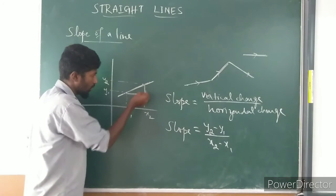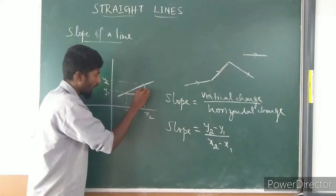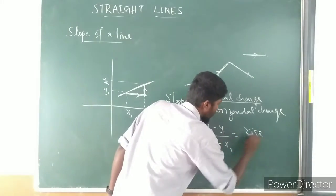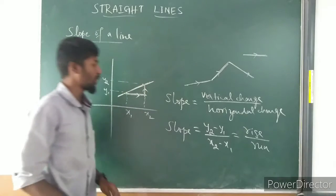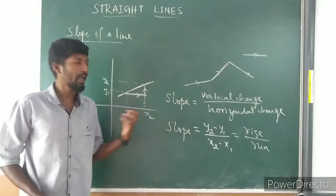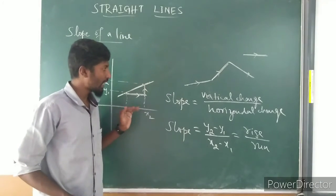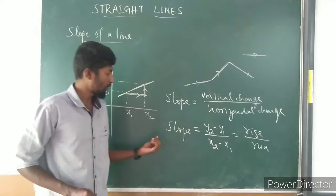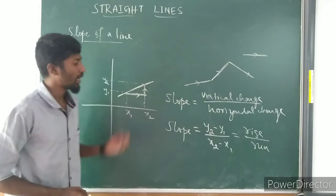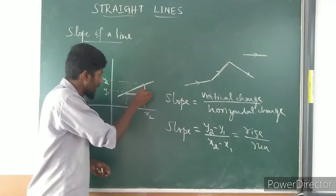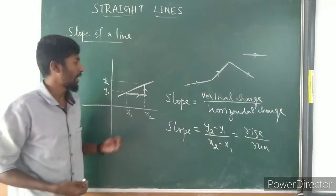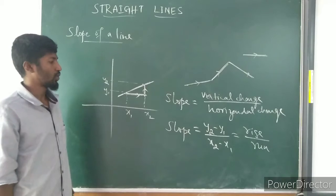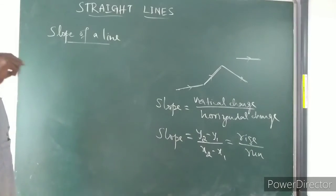So slope is nothing but vertical change over horizontal change — or you can say rise over run. If you want to define the slope of a line to find how steep it is and its direction, slope equals rise over run, that is the change in the vertical with respect to the change in the horizontal.